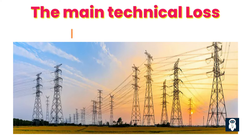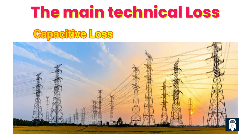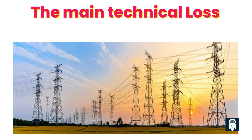Balancing the reactive power in the network through proper capacitor placement and utilizing more efficient equipment helps reduce inductive losses. Capacitive losses occur when excess reactive power is generated in the power system, which can lead to over-voltage conditions and energy losses due to the reactive power flowing back and forth. Reactive power compensation techniques, like installing shunt capacitors, help minimize these losses.